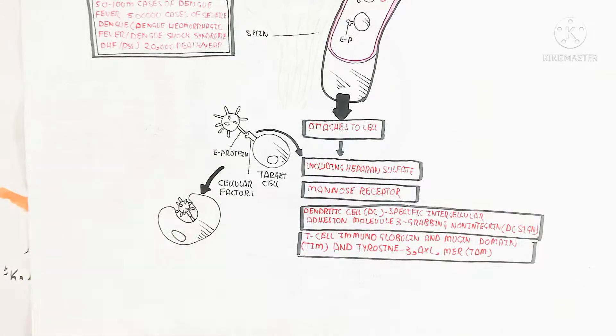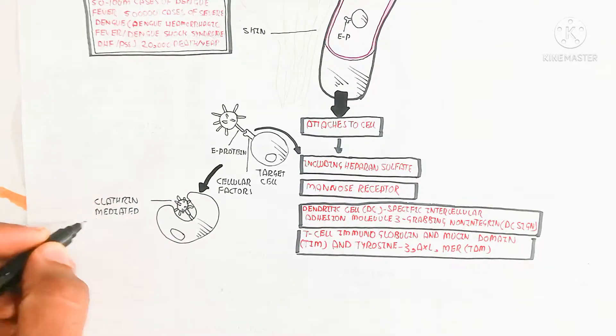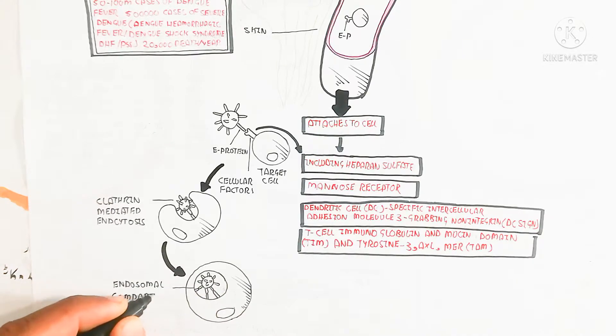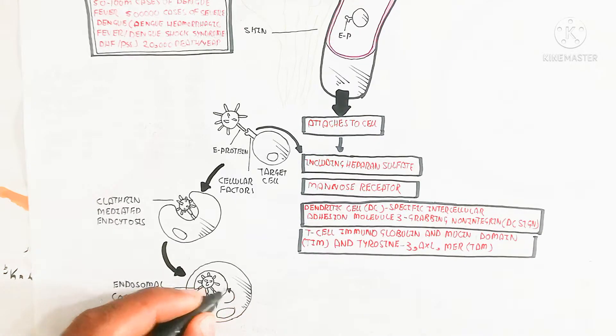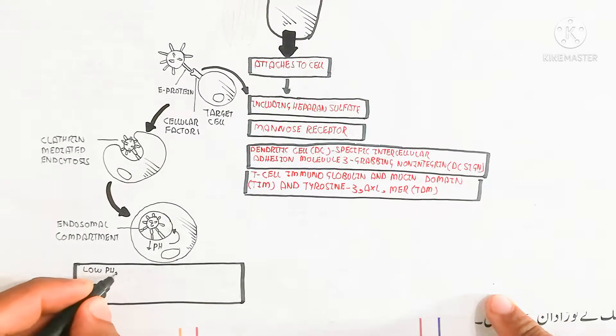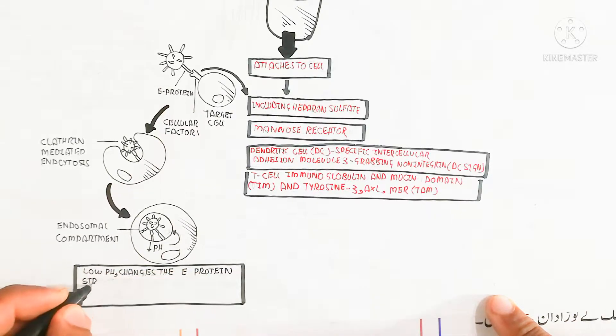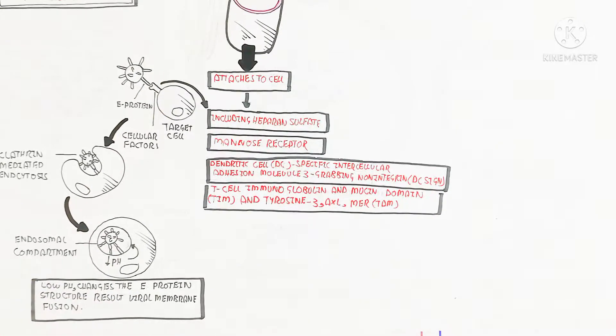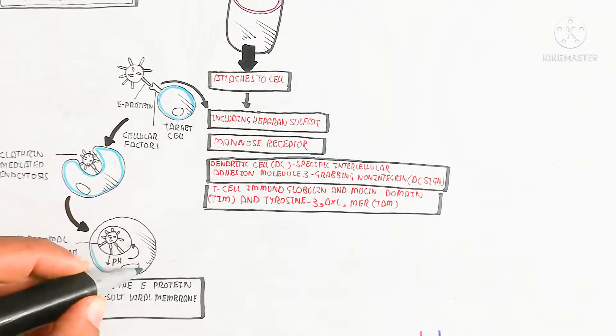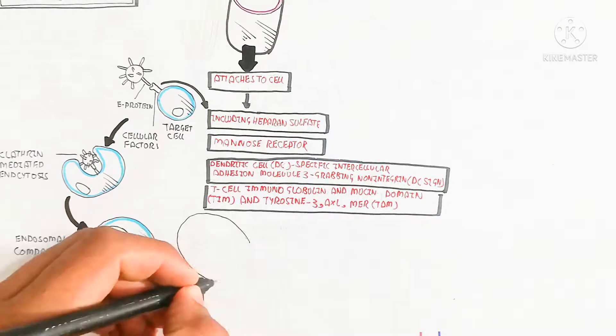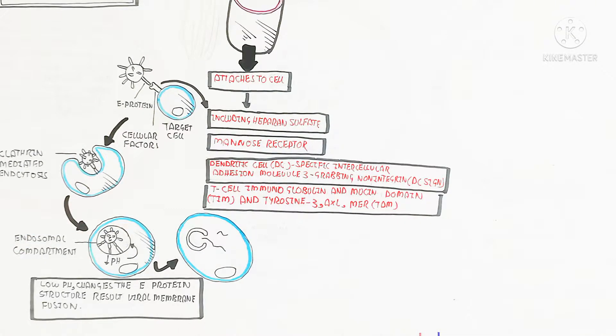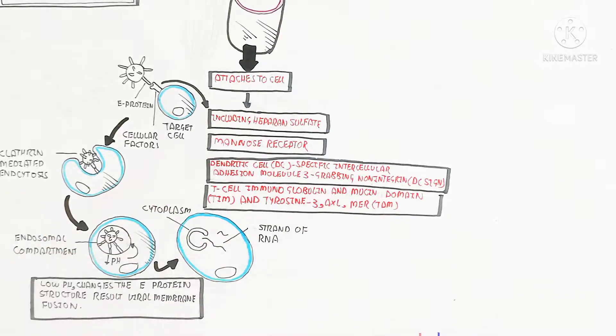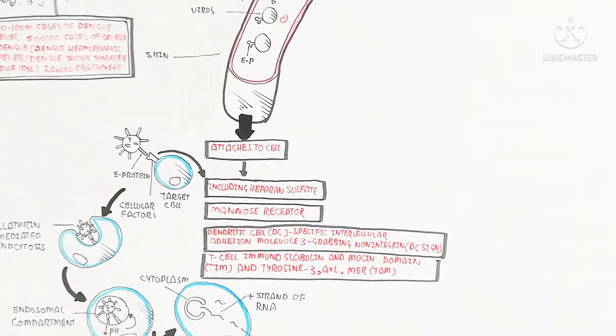After infection, clathrin-mediated endocytosis occurs. The endosomal compartment forms with low pH, which changes the E protein structure, resulting in viral membrane fusion. During low pH, messenger RNA will be produced from the positive strand RNA into the cytoplasm.